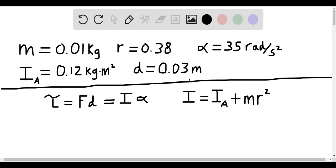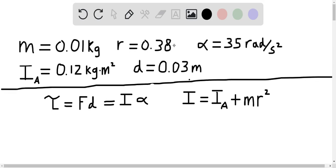We're considering a dart held in somebody's hand with a mass m of 0.01 kilograms at a distance r of 0.38 meters away from the lever point.